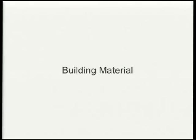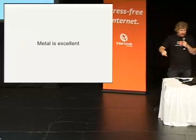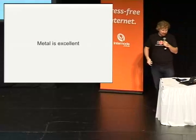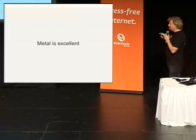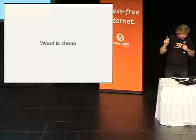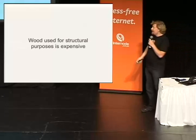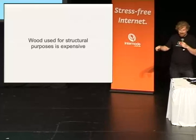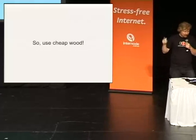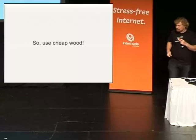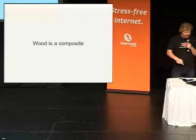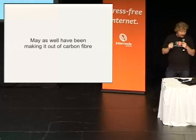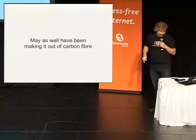What do you do for building material? Metal is excellent — it has very predictable stress qualities, so you're not going to kill people, because apparently that's bad. But wood is cheap. Wood used for structural purposes is expensive — the stuff they make you use to build your house costs money. So use cheap, shitty wood. Downside: wood is a composite, so it has a whole bunch of different properties than metal. It's essentially as variable as making it out of carbon fiber.